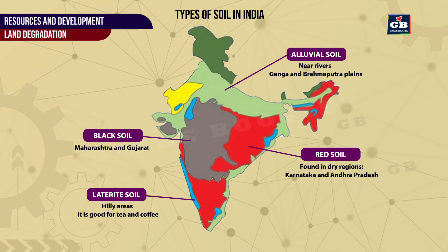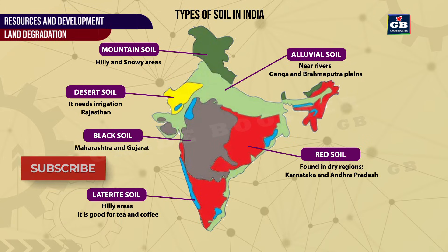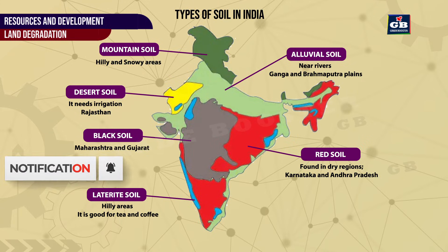4. Laterite soil — found in hilly areas and good for tea and coffee plantations. 5. Desert soil — found in Rajasthan and needs irrigation to grow crops. 6. Mountain soil — found in hilly and snowy areas.